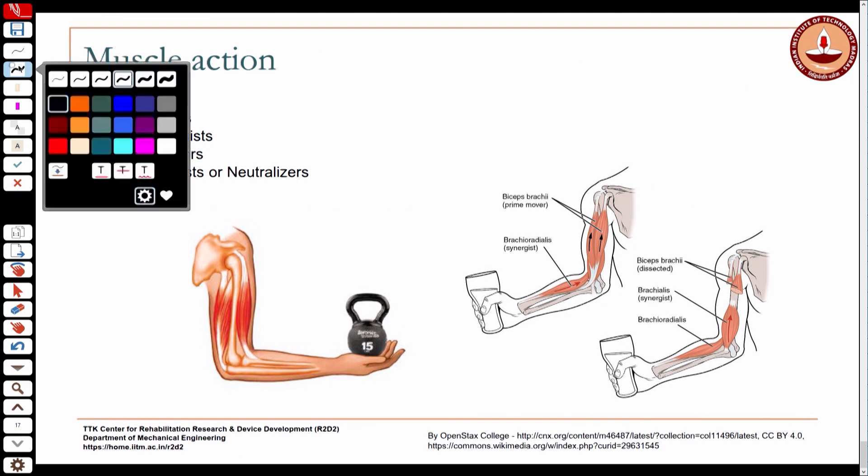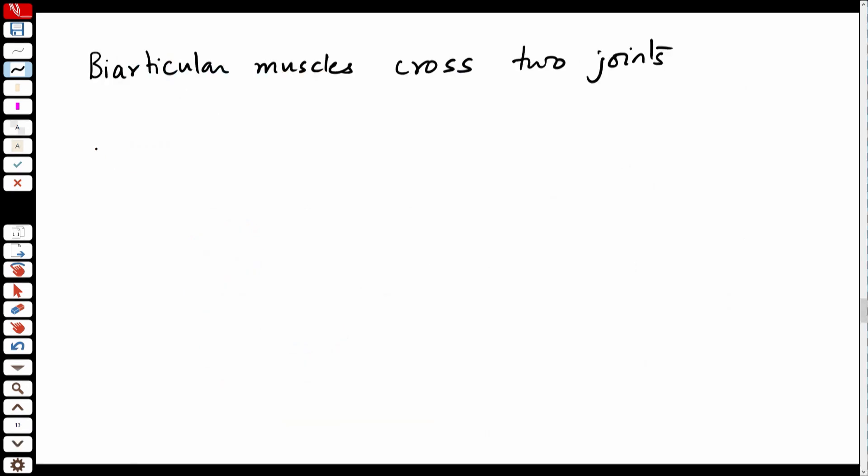Now we know the difference between concentric action, eccentric action, and isometric action. There is some terminology used to describe muscles based on the activity they are performing. When a certain action is performed, some muscles are called agonists, and you also have synergists, stabilizers, or neutralizers — I will explain these terms.